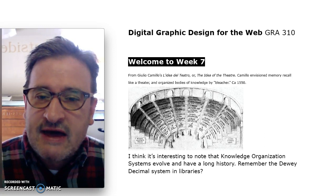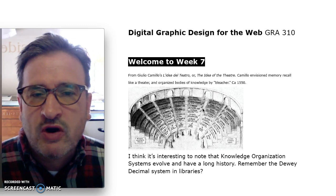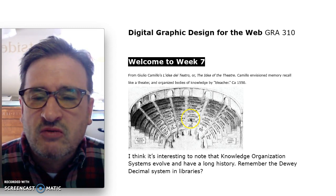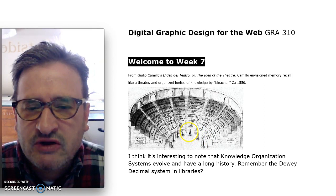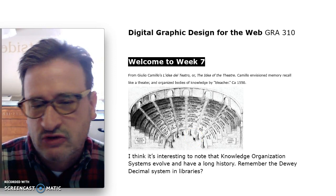Here is what's called a memory theater. This is another way of organizing knowledge in the 16th century, and this was a design by Giulio Camillo. The bleachers or the arena stands — each one of them represents a body of knowledge. These are the seven pillars of wisdom, which is like the basic taxonomy for organizing classical knowledge.